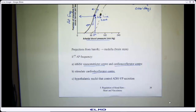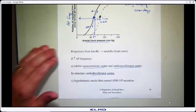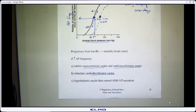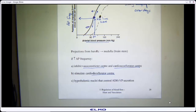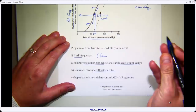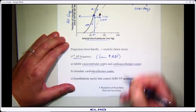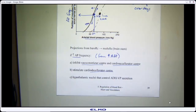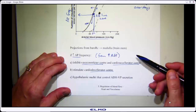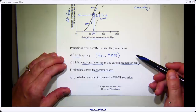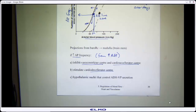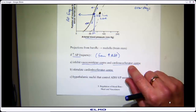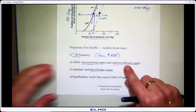We have projections from our sensor synapsing onto another group of neurons. We're going to change their action potential frequency and pattern and send information out to effectors. If we have an increase in action potential frequency from these sensors — which comes from an increase in mean arterial pressure — we would inhibit the vasoconstrictor center and the cardio-accelerator center, and stimulate the cardio-decelerator center. If mean arterial pressure increased, we'd want the heart to decrease heart rate and decrease contractility.